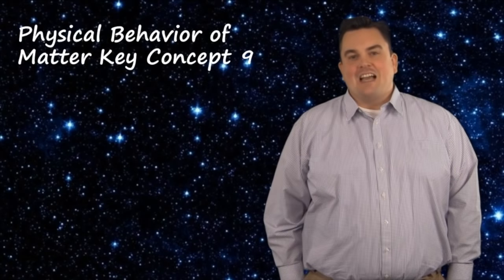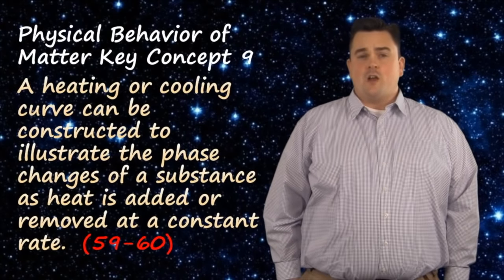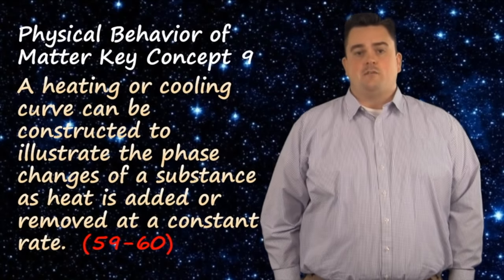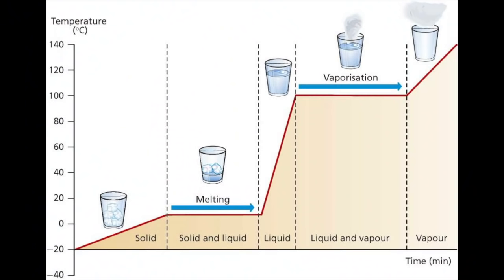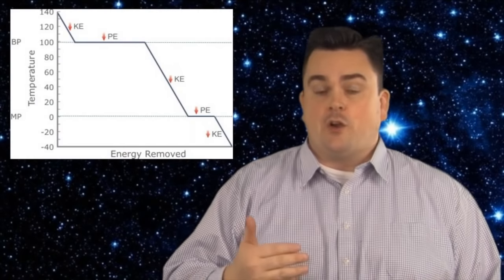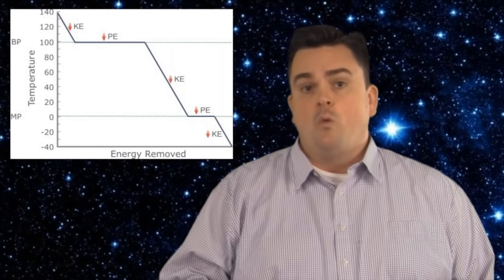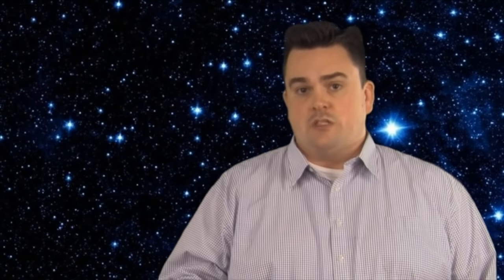Physical behavior of matter, key concept nine. A heating or cooling curve can be constructed to illustrate the phase changes of a substance as heat is added or removed at a constant rate. In a heating curve, on the slanted parts, the sloped parts, is where kinetic energy is increasing and potential energy is staying the same. On the flat parts is where we see a phase change. On the flat parts, kinetic energy is staying the same and potential energy is increasing. On a cooling curve, everything is exactly the opposite. Where you have kinetic changing, it's actually a decrease. Where you have potential energy changing, it is also a decrease.